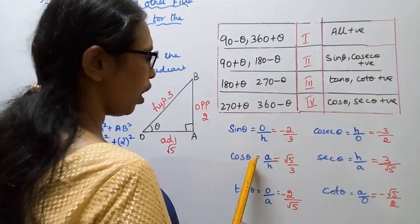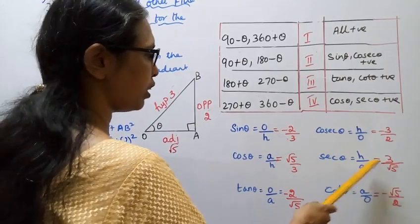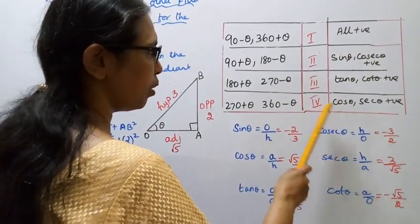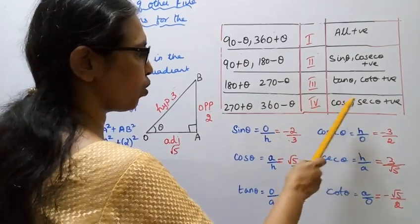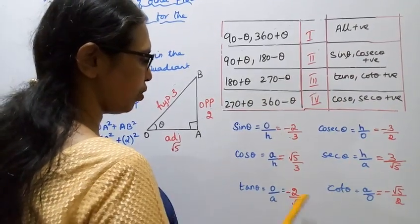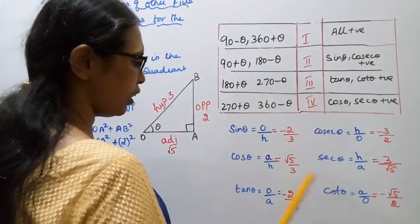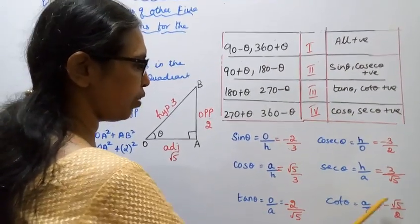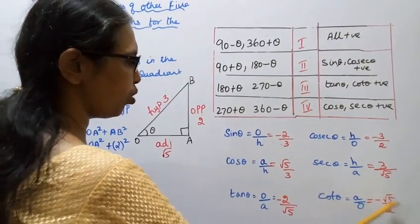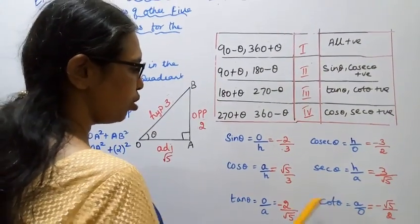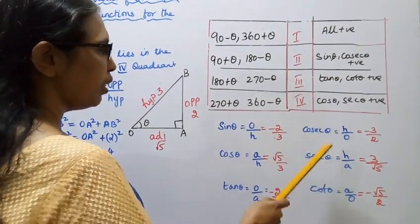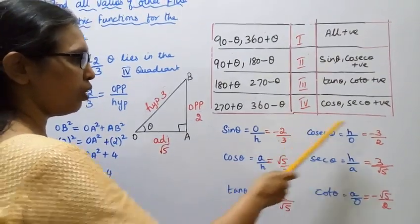Cos theta equals 3 by root 5 and secant theta equals 3 by root 5 — cos and secant are positive in the fourth quadrant. Cot theta equals the reciprocal of tan theta equals minus root 5 by 2.